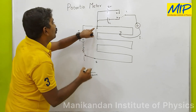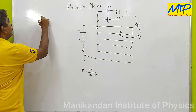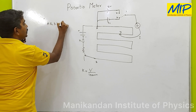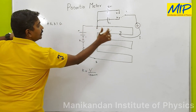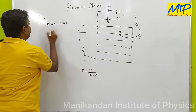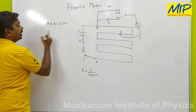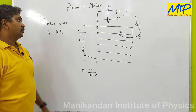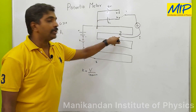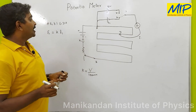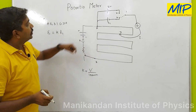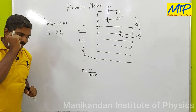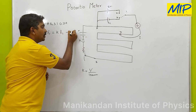For the loop A–E1–3–1–G–D–A, my EMF of the first cell equals the potential drop per unit length times L1. The distance from A to D is L1, which is the balancing length, and the potential drop across this length equals E1. So: E1 = K × L1. This is equation 1.